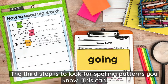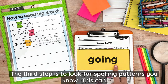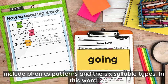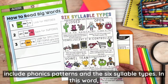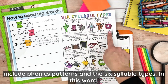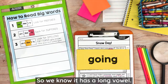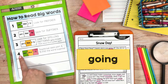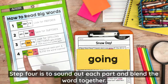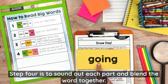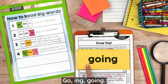The third step is to look for spelling patterns you know. This can include phonics patterns and the six syllable types. In this word, the first syllable is an open syllable, so we know it has a long vowel. Step four is to sound out each part and blend the word together: go... ing... going.